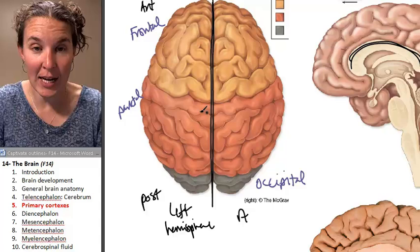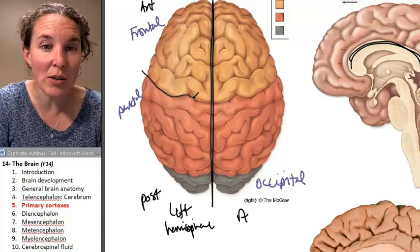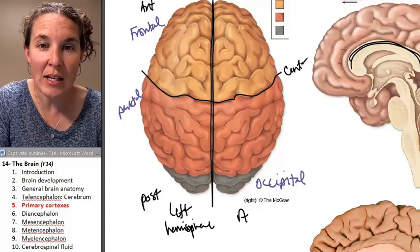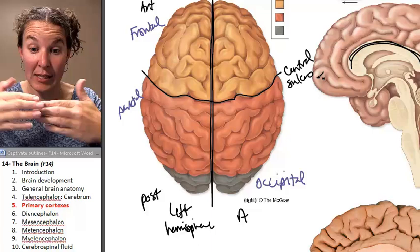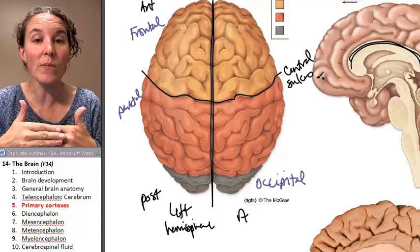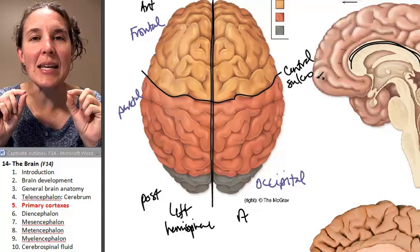The other landmark we're going to keep track of is an anatomical location called the central sulcus. The central sulcus is in the coronal plane — it separates the anterior and posterior of the brain. It's perpendicular to the longitudinal fissure, and it is the mark that separates the frontal lobe from the parietal lobe.